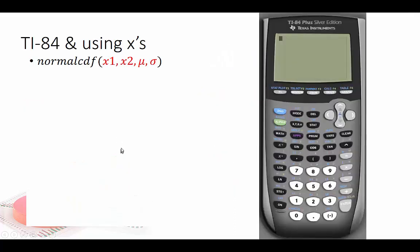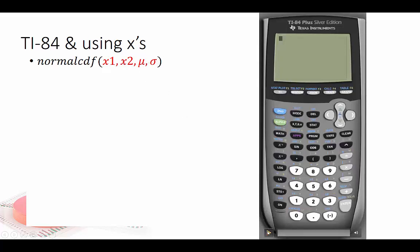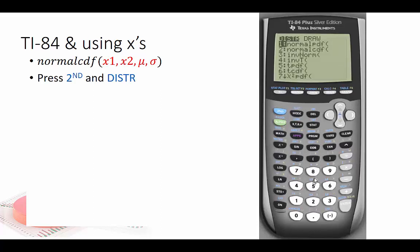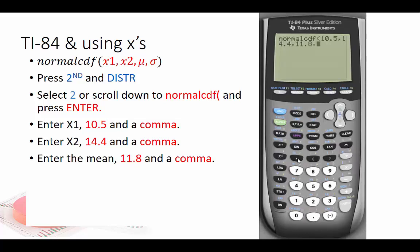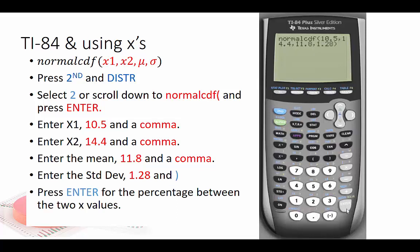There is a way to use your calculator to calculate percents without actually calculating z-scores. This is okay every once in a while, but on your AP test they expect you to know what a z-score is, so I'll show this with some trepidation. The function is normalcdf, but instead of z-scores you enter x1 and x2, then the mean and standard deviation in x units. Press 2nd and distribution, scroll down and hit enter, enter your x-values — for example 10.5 to 14.4 — then a comma, the mean, and the standard deviation, and press enter for the percentage between the two values.